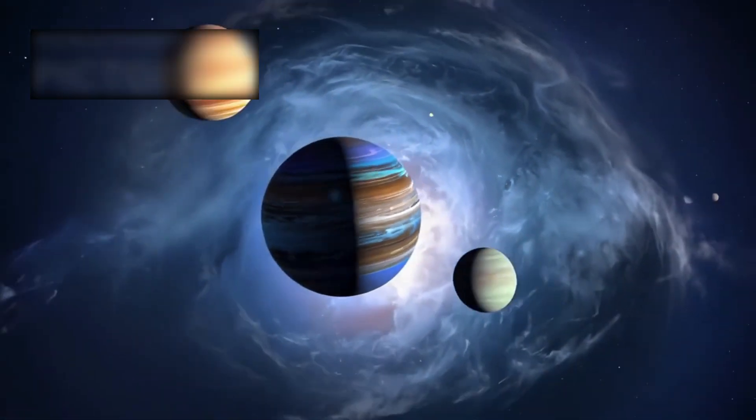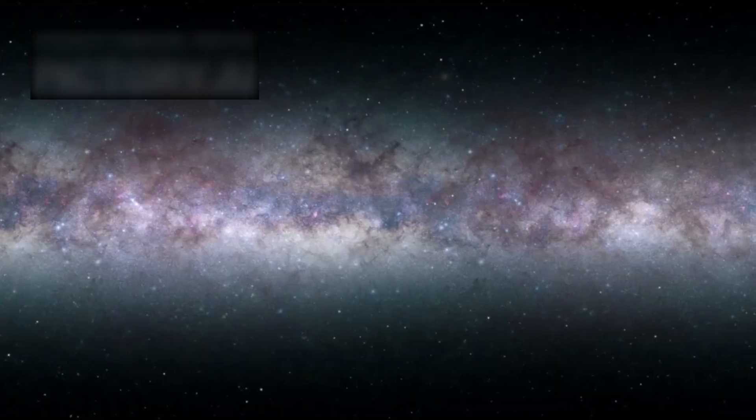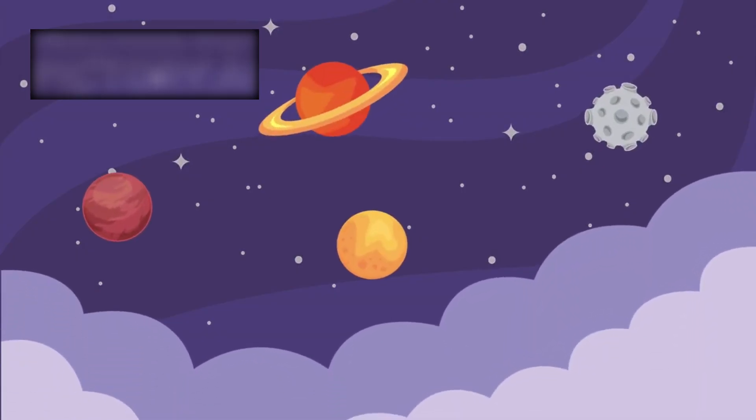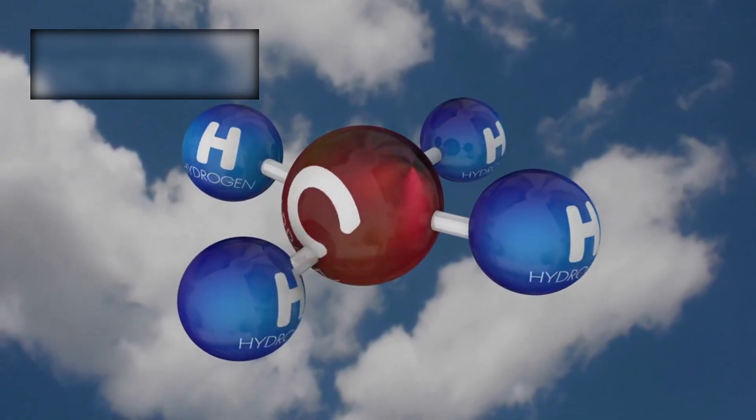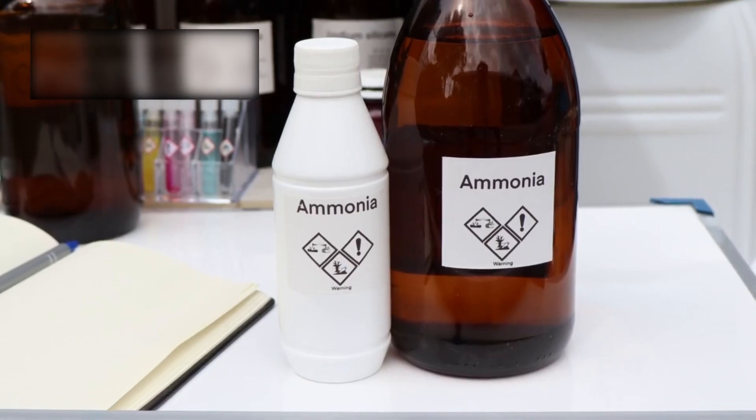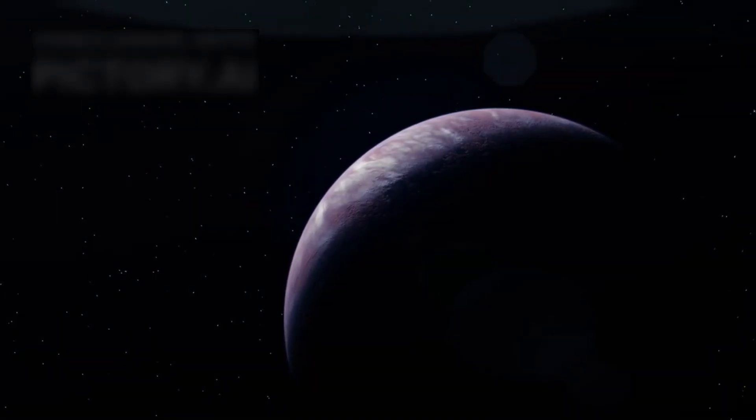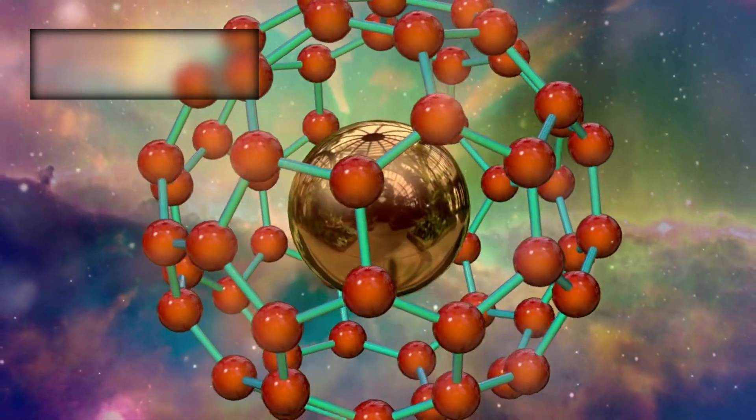Planets like K-218b, which fall in size between Earth and Neptune, are absent in our own solar system. This makes them particularly interesting to astronomers. The recent detection of methane and carbon dioxide, paired with the lack of ammonia, suggests that K-218b might indeed contain a hidden ocean beneath its skies. Even more fascinating are early hints of dimethyl sulfide, a chemical compound on Earth produced almost entirely by marine plankton. If confirmed, this would be one of the strongest indicators yet that biology may be shaping the chemistry of a distant planet.